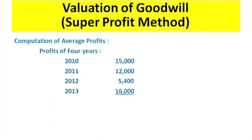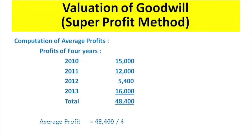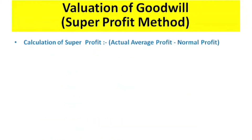Total profits: ₹15,000 + ₹12,000 + ₹5,400 + ₹16,000 = ₹48,400. So the total profits are ₹48,400. Average profit = ₹48,400 ÷ 4 = ₹12,100.